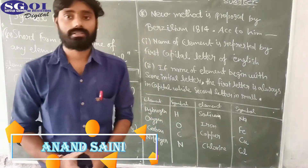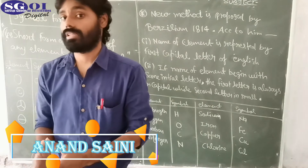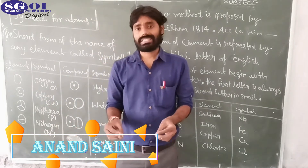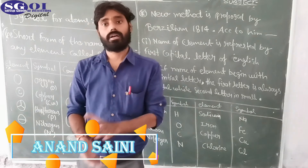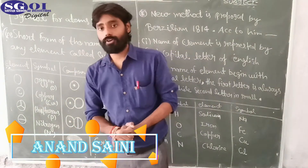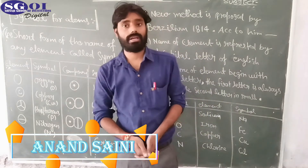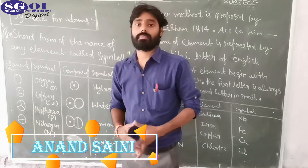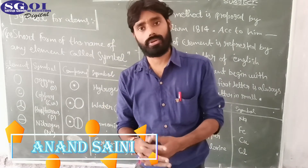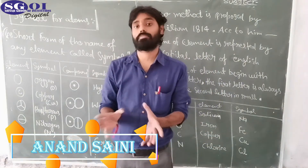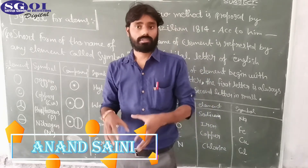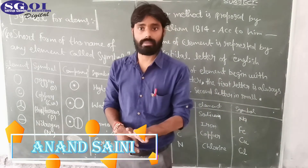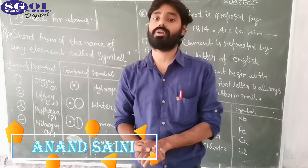It is the symbol of elements. Look at here — what is the symbol? What is the definition? A symbol is the represented form, and it is the short form of anything. Here it also applies to elements. The short form of the name of any element is called the symbol of that particular element. The symbol of the element is the shortest form of the name of the particular element.